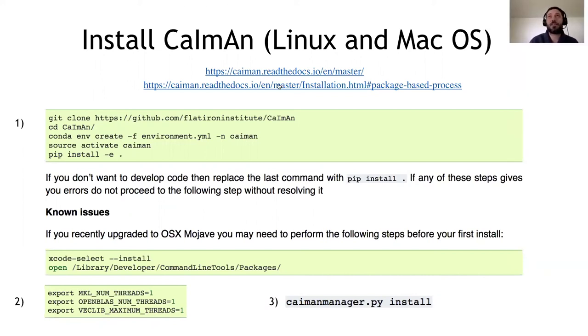All the instructions are at this link that I also paste in the chat if you want to have a look at it. But basically what you do, you can just clone CaImAn. This is the installation, not for developers, just for using CaImAn. You clone the repository, you enter into the folder of the repository. And then by running this command, you will create an environment automatically that is called CaImAn and which contains a set of packages that are necessary for CaImAn to work.